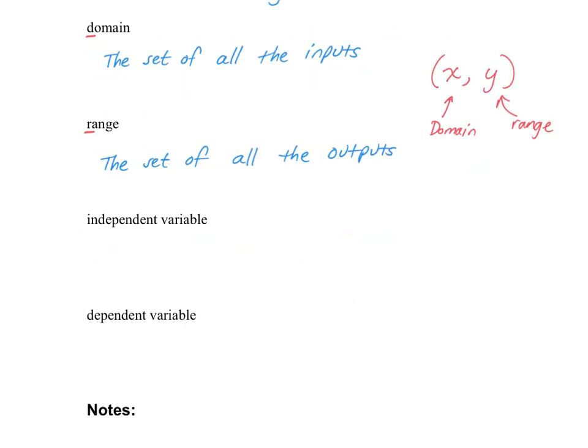The independent variable is your x variable, and the dependent variable is your y variable. So for example, in this equation y equals negative x plus 10, the y is your dependent variable and the x is your independent variable. So the y answer depends upon what the x number is that gets plugged into the equation.